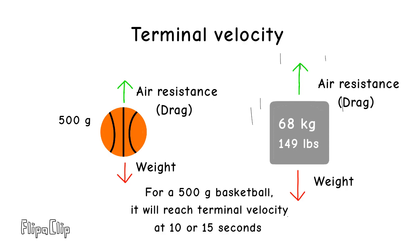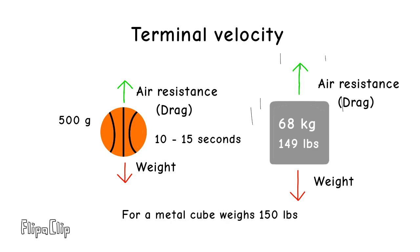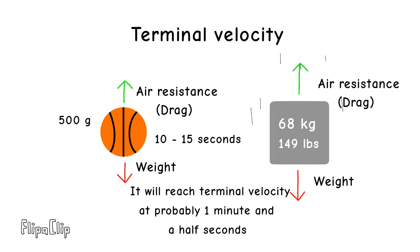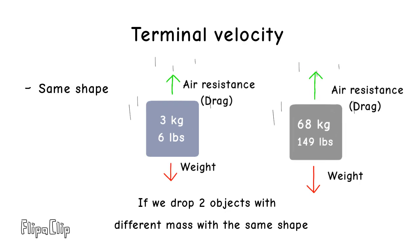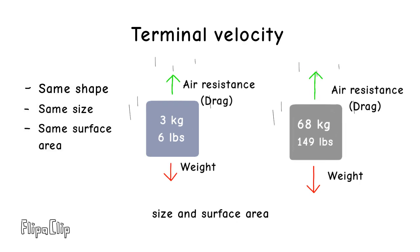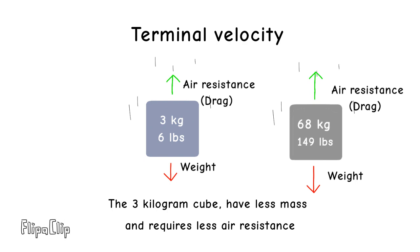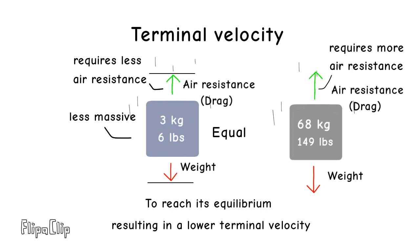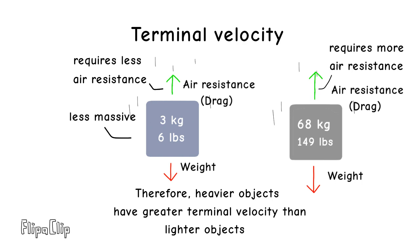For a 500 gram basketball, it will reach terminal velocity at around 10 to 15 seconds. For a metal cube weighing 150 pounds, it will reach terminal velocity at probably 1 minute and a half. If we drop two objects with different mass but the same shape, size, and surface area, the 3 kilogram cube has less mass and requires less air resistance to reach its equilibrium, resulting in a lower terminal velocity. Therefore, heavier objects have greater terminal velocity than lighter objects.